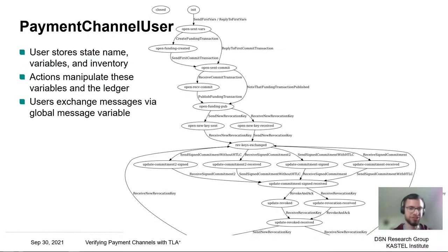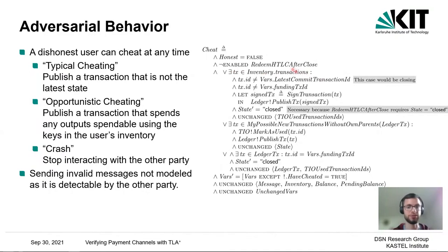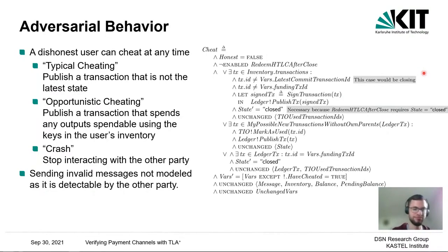To illustrate an action, we look at one special adversarial action: cheat. A dishonest user can cheat at any time, and there are different types of cheating. The typical cheating means a user looks into their inventory of transactions, chooses a transaction that is not the latest commitment transaction or the funding transaction, signs it, and publishes it on the ledger—thus publishing an outdated state.